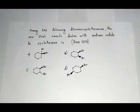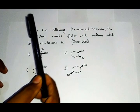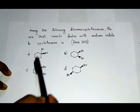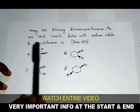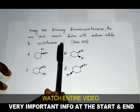Hello guys, in this video we will solve a question from CSIR NET June 2013. Among the following dibromo cyclohexanes, the one that reacts faster with sodium iodide to cyclohexene is...